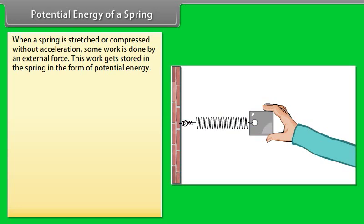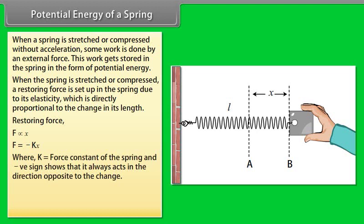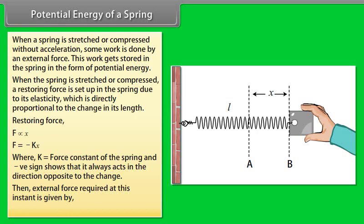Potential energy of a spring. When a spring is stretched or compressed without acceleration, some work is done by an external force. This work gets stored in the spring in the form of potential energy. When the spring is stretched or compressed, a restoring force is set up in the spring due to its elasticity which is directly proportional to the change in its length. Restoring force is given by F is directly proportional to x, F equals minus Kx, where K equals force constant of the spring, and negative sign shows that it always acts in the direction opposite to the change. Then external force required at this instant is given by F equals Kx.